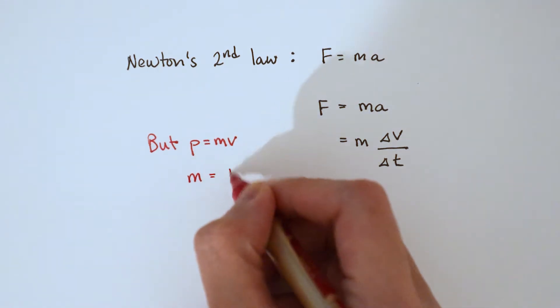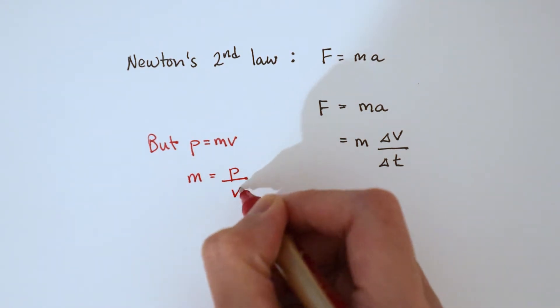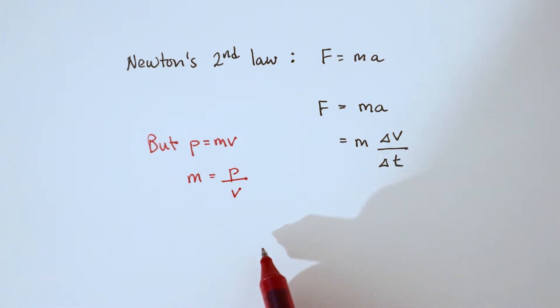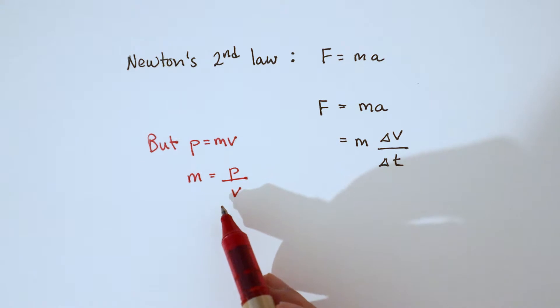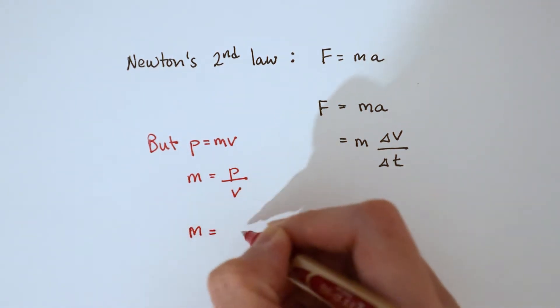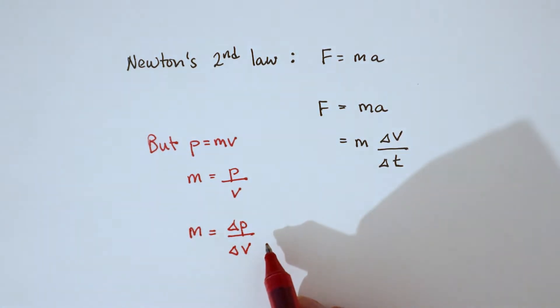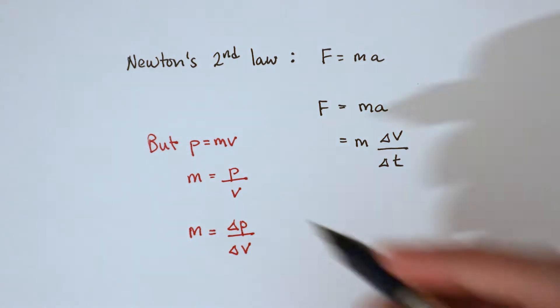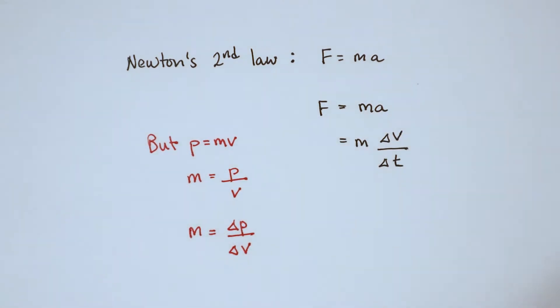We have to rearrange it so that mass becomes our subject. So mass is equal to momentum divided by velocity. And if this equation is specifically for a certain change in velocity, there must be a certain change in momentum. So we write it as m is equal to delta p divided by delta v. So delta here represents that it is a change of something.